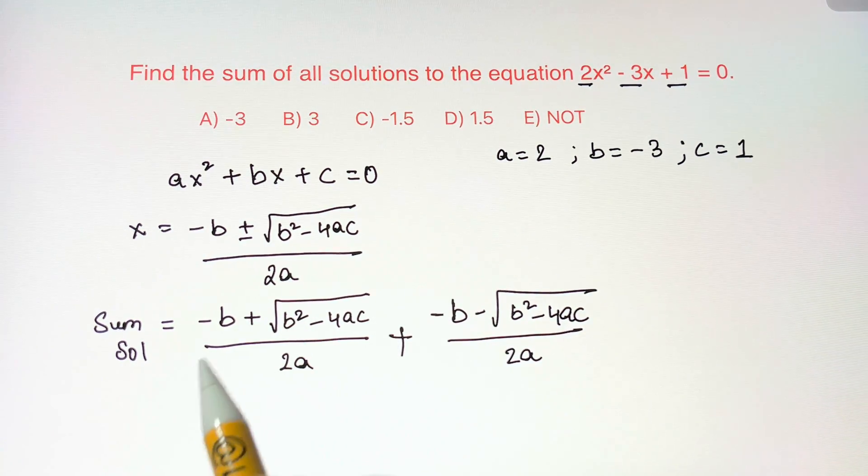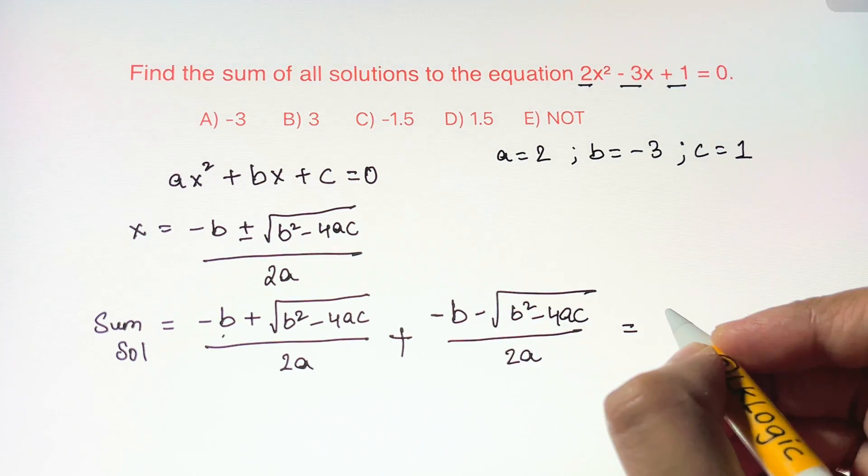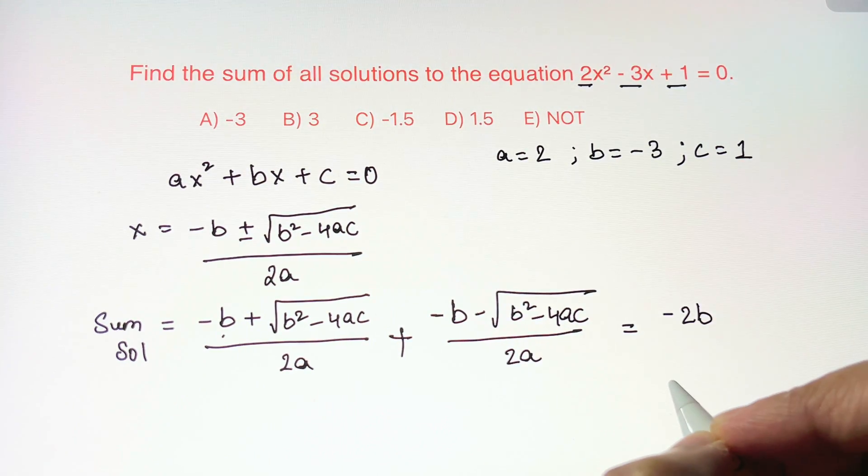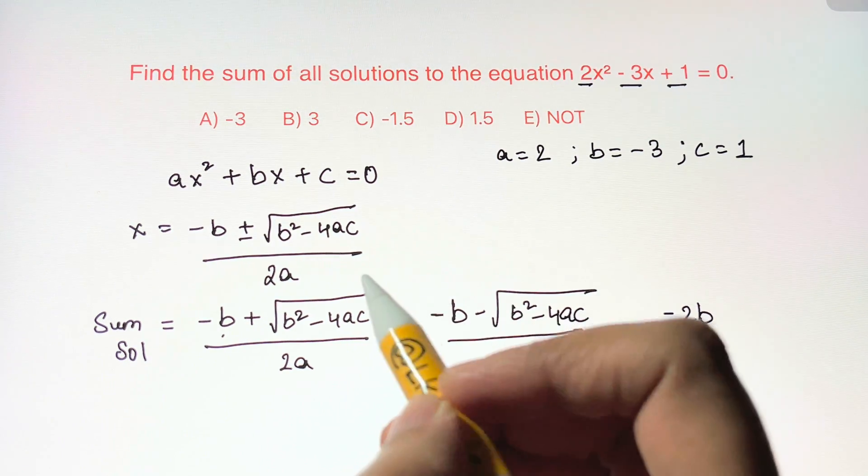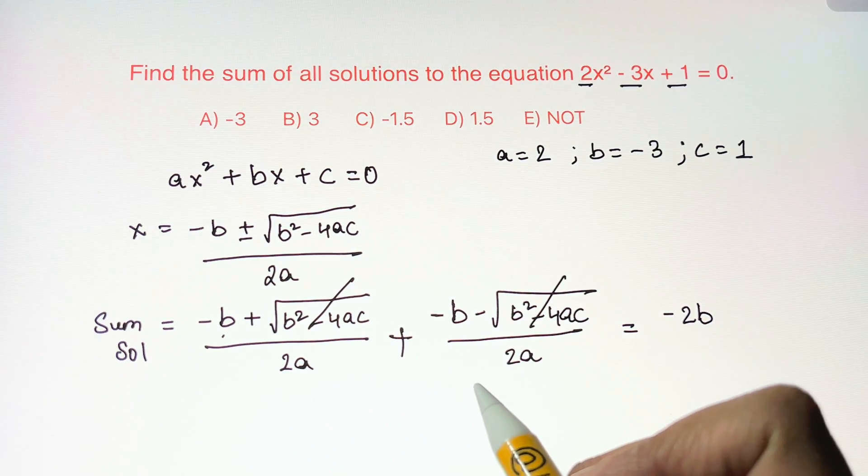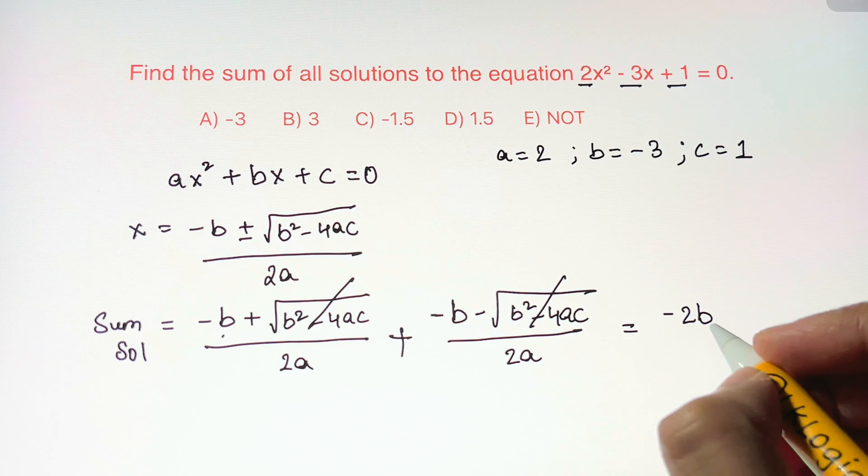By doing so we get -b - b which is -2b, then we have plus the square root term and minus the same term. So those terms cancel out and then in the denominator we have 2a.